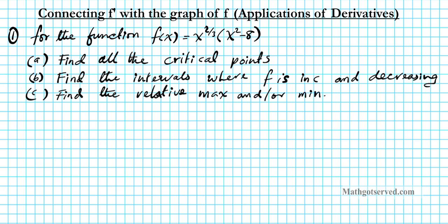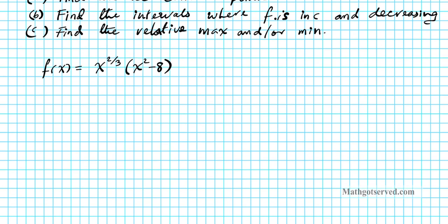All of this information that we need to find — we have to use f prime to determine the behavior of the graph of f. So the first thing we have to do is find the derivative of this function: f(x) = x^(2/3) times (x² - 8). We can use the product rule here, or just distribute and then use term-by-term differentiation. I like to distribute and use term-by-term differentiation.